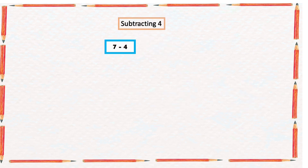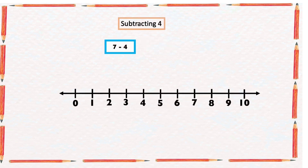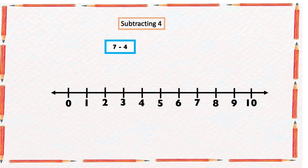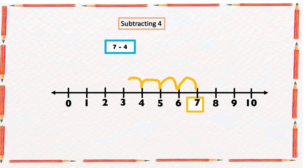Seven minus four: in the number line we're going to start from number seven and count four numbers backward: one, two, three, four. The arrow ended at three, so seven minus four is three.